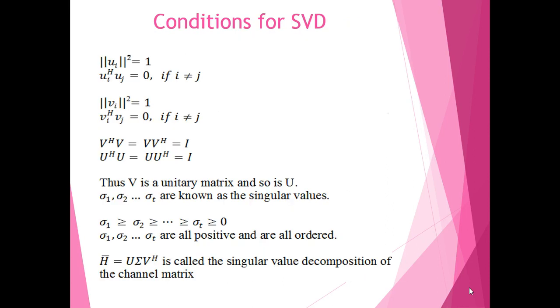Next, we come to the conditions for singular value decomposition. First, |ui|² should be unity. Second, ui^H × uj should equal 0 provided i is not equal to j. The same conditions are true for v as well.